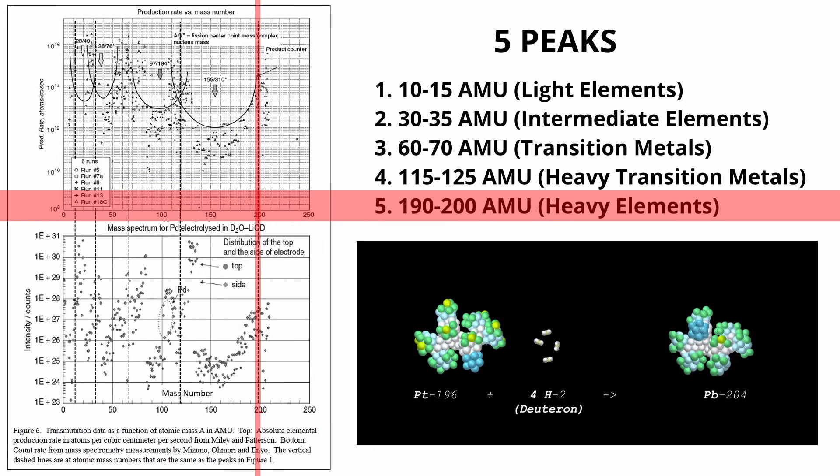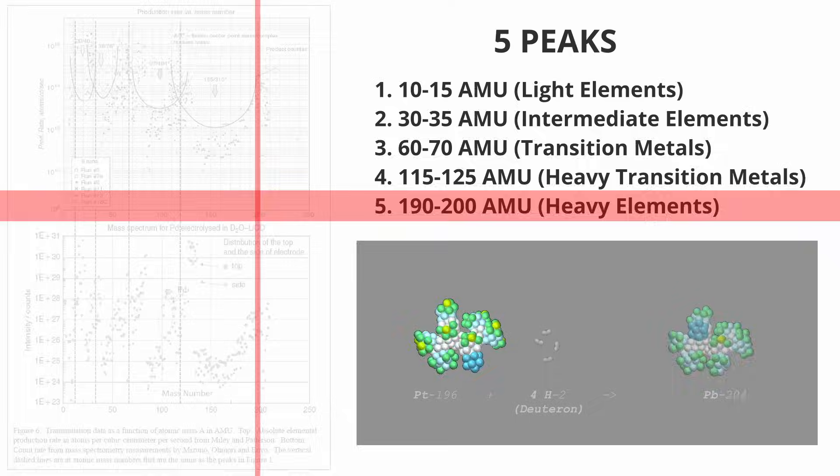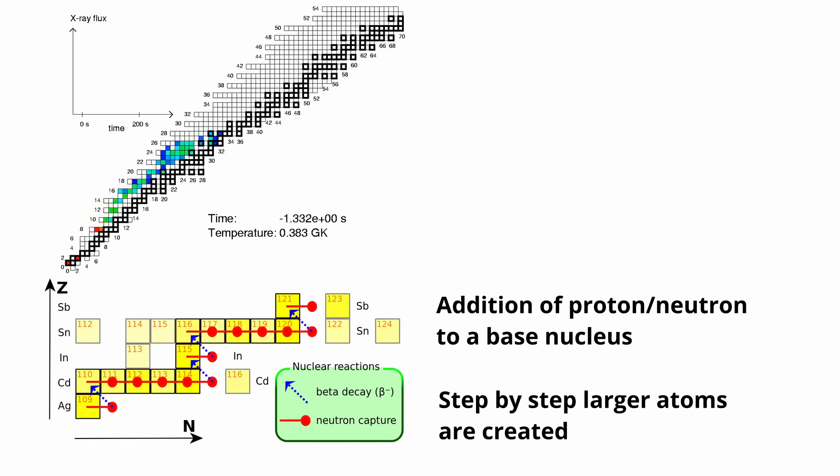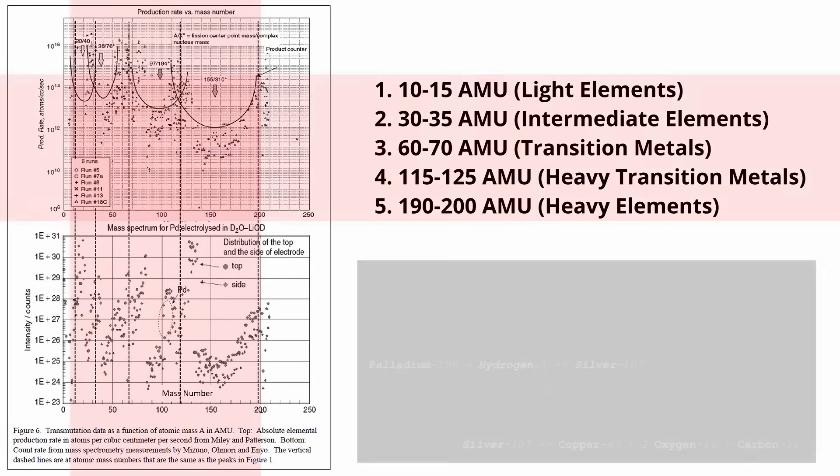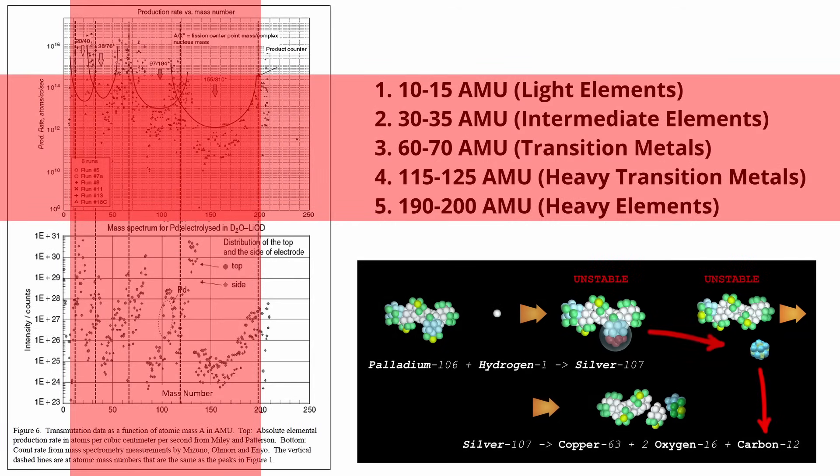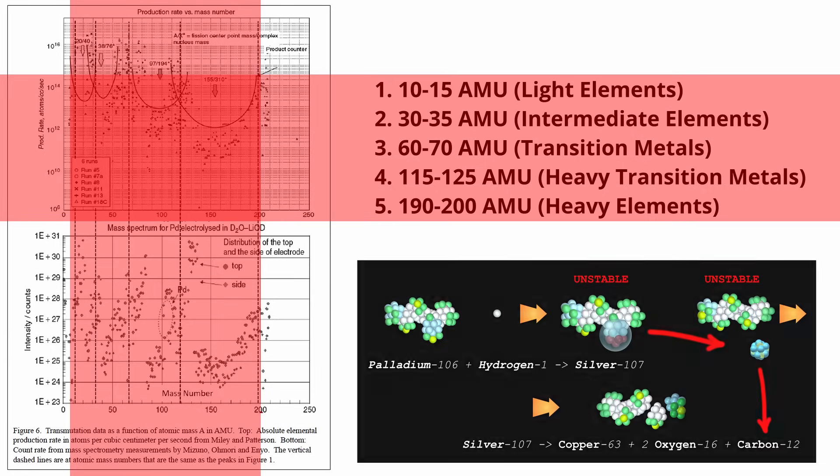The fifth peak: these are possibly formed from stepwise additions to heavier metals such as platinum forming lead. This pattern challenges the classical view of nucleosynthesis where nuclear reactions occur in well-defined steps, adding or subtracting individual nucleons. The formation of isotopes at these peaks suggests a complex interplay of fusion reactions leading to fission reactions where larger and smaller chunks are shed during LENR. Such processes are unusual because they imply a level of nuclear flexibility and interaction that is not typically observed.